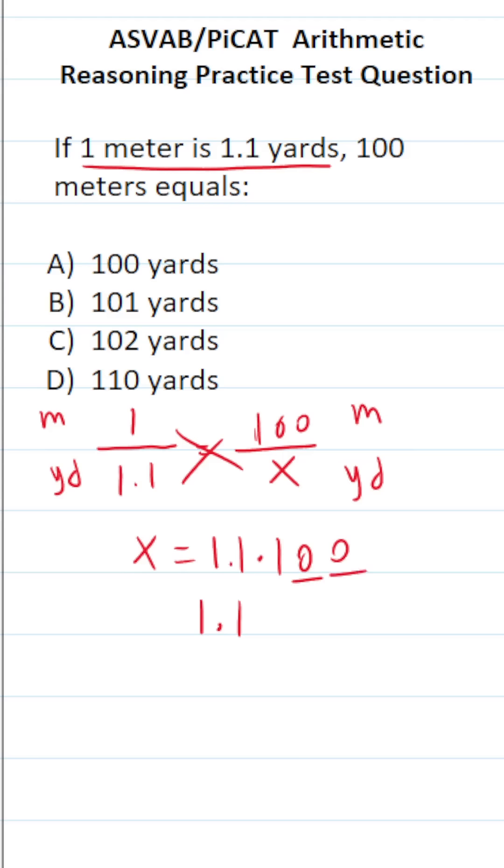So in 100, there are two zeros. That's just going to prompt you to take the decimal in 1.1 and shift it one, two times to the right. In other words, it's 110.